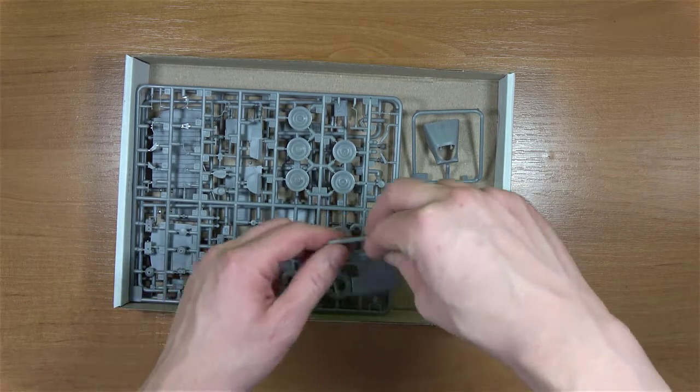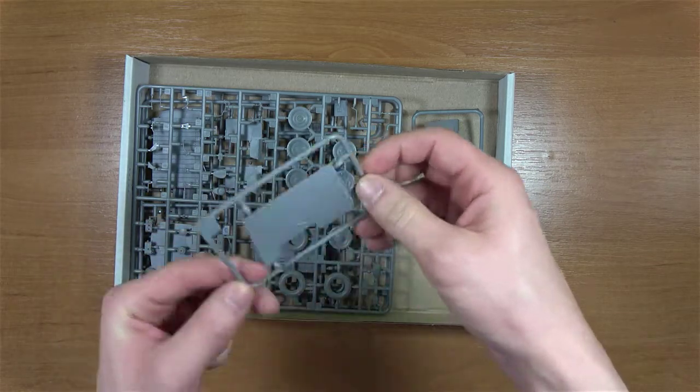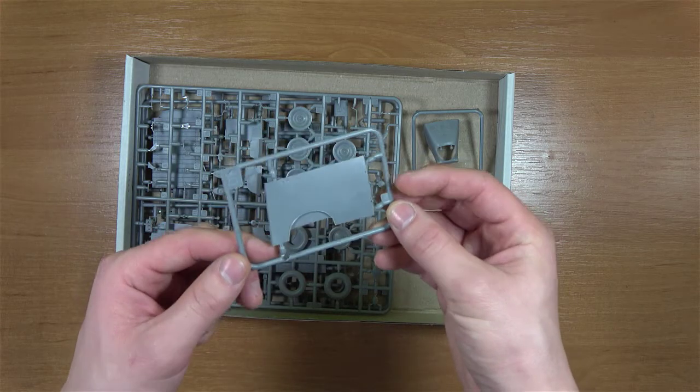Kolejna rameczka to jest bok pojazdu. Z tego co mi się wydaje to jest chyba prawy bok.